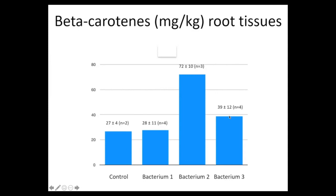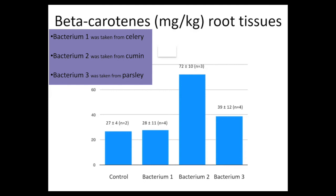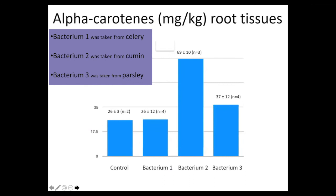Certain endophytes can really improve the metabolite and antioxidant content of plants. Alpha-carotene data showed essentially the same pattern — about two to two and a half times more carotenes with the parsley endophyte. So there's a whole area that people study around endophytes improving nutritional quality.